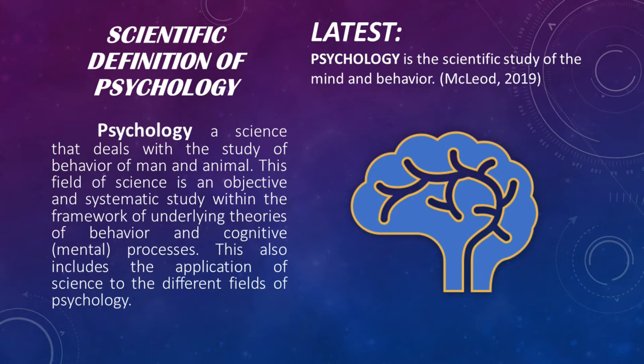If we check the history of psychology, it involves the study of how the brain of animals works. The experimental study of the behavior of human beings is first tested on animals, simply because some animals have the same brain structures as human beings. However, in the latest study of the APA, psychology is the scientific study of the mind and behavior — and in this definition, the behavior and mind referred to is that of human beings.